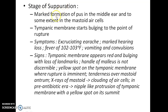The next stage is the stage of suppuration. There is marked formation of pus in the middle ear and to some extent in the mastoid air cells. The tympanic membrane starts bulging to the point of rupture. Symptoms include excruciating earache, marked hearing loss, fever of 102 to 103 degrees Fahrenheit, vomiting, and convulsions in severe cases. Signs include the tympanic membrane appearing red and bulging with loss of landmarks, the handle of malleus not discernible, a yellow spot on the tympanic membrane where rupture is imminent, and tenderness over the mastoid antrum. X-rays of mastoid show clouding of air cells. In the pre-antibiotic era, a nipple-like protrusion of the tympanic membrane with a yellow spot on its summit could be seen.